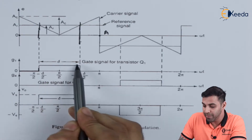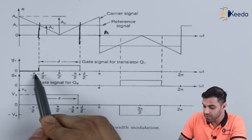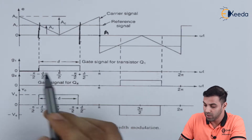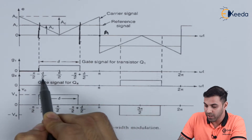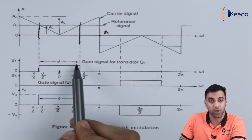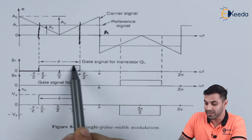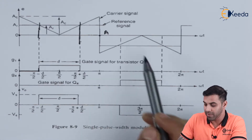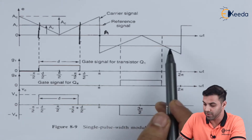Let delta be the width of the pulse that we are getting. The time interval goes from 0, then pi/2 minus delta/2, then pi/2, and pi/2 plus delta/2. So this point is 0, this point is pi/2 minus delta/2, this is pi/2, and this is pi/2 plus delta/2. By changing the width of this carrier signal, we can definitely change the on-time of this transistor. The same condition applies for this portion of the carrier signal and the reference signal.